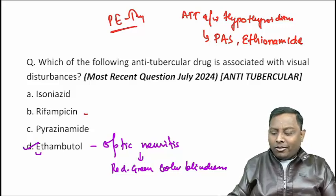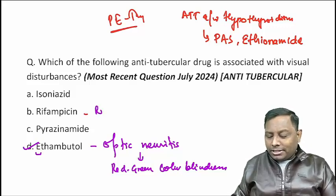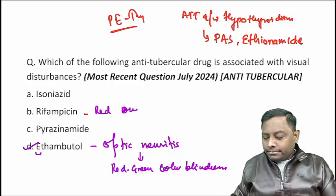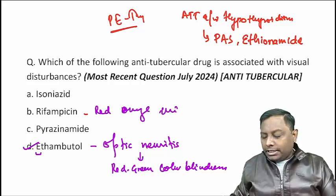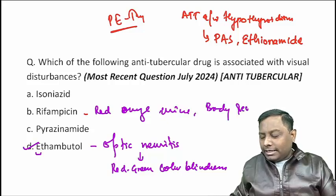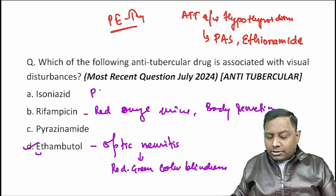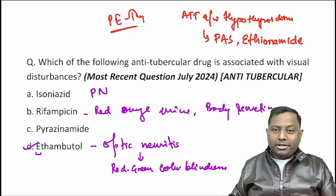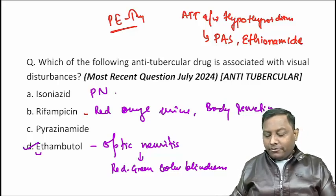Rifampicin — as you all know — causes red-orange discoloration of urine and body secretions: red-orange urine and red-orange body secretions. That is rifampicin. Isoniazid causes peripheral neuropathy — that is a very, very important side effect. Peripheral neuropathy.